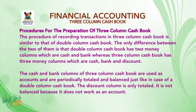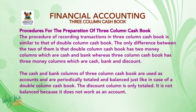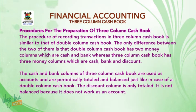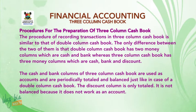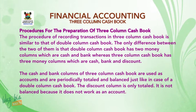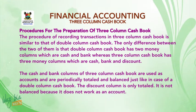The procedures of recording transactions in three column cash book is similar to that of double column cash book. The only difference between the two is that double column cash book has two money columns — cash and bank accounts — while three column cash book has three: cash, bank, and discounts. The cash and bank columns of three column cash book are used as accounts and are periodically totaled and balanced, just like in the case of a double column cash book.